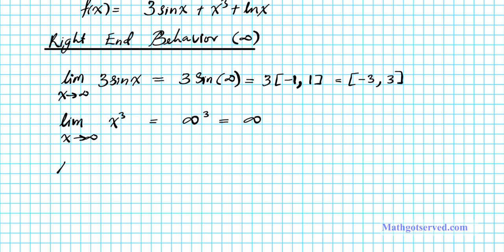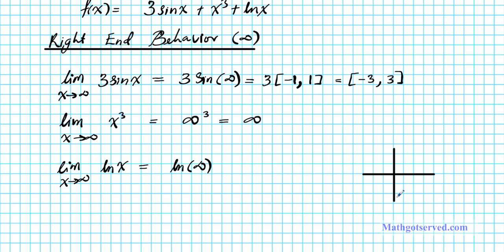The third addend function is the logarithmic function. The limit as x approaches infinity of the natural logarithm of x equals the natural logarithm of infinity. The logarithmic function has a vertical asymptote at x equals 0 and tends towards infinity slowly. So the limit as x approaches infinity of ln x is also infinity, making it a candidate. We now have two candidates to compare.